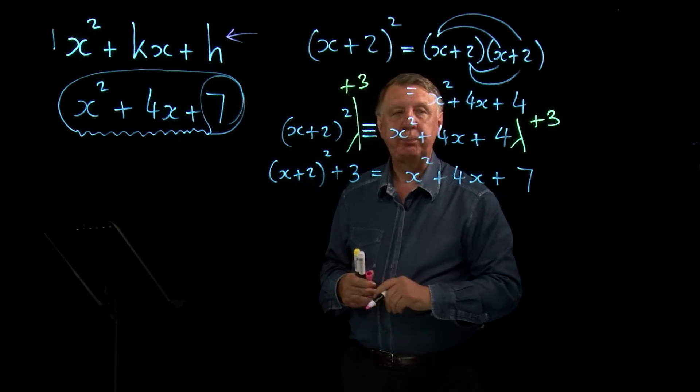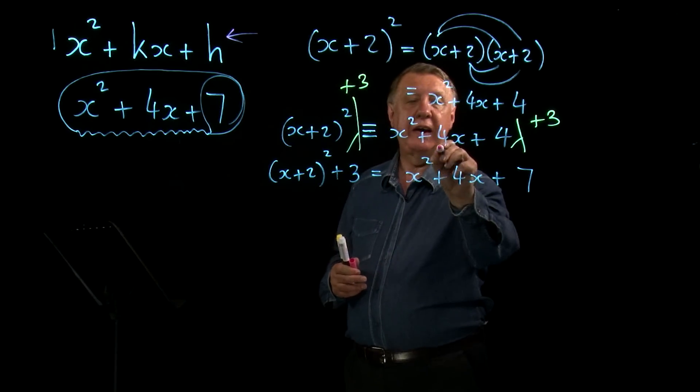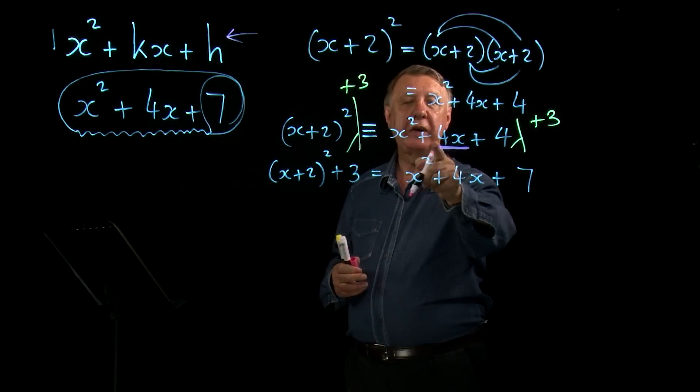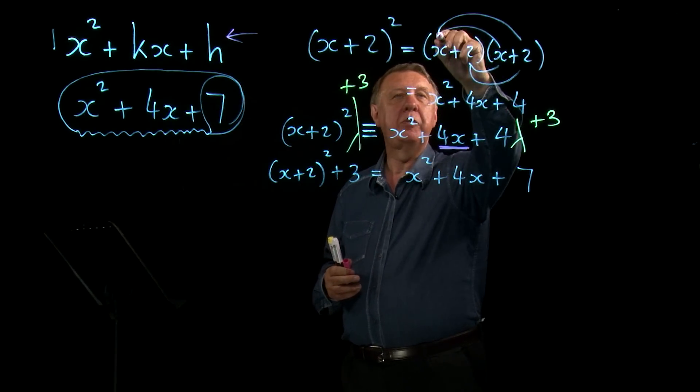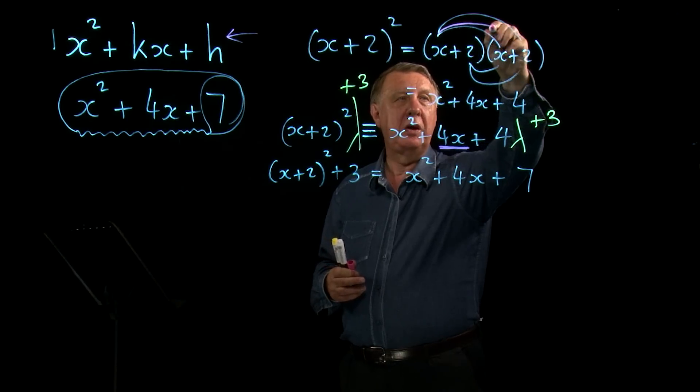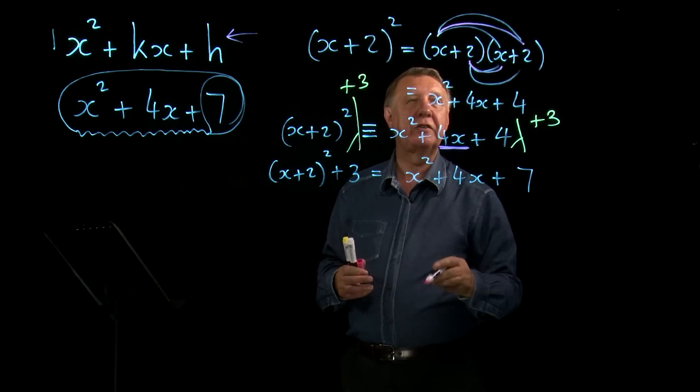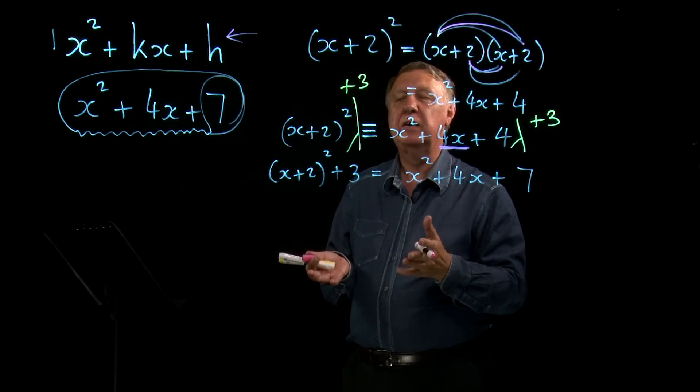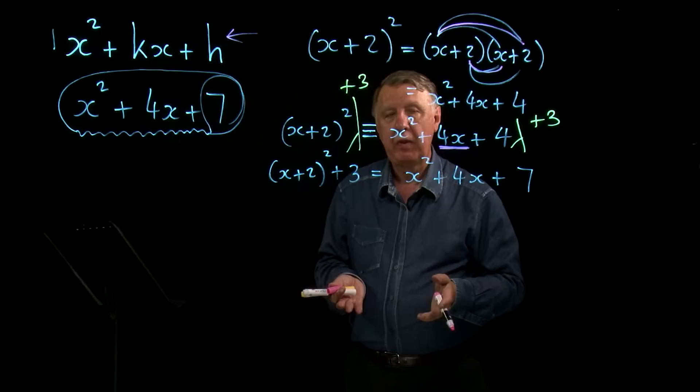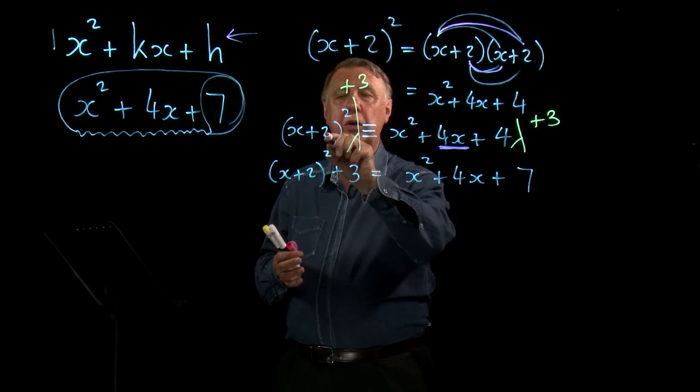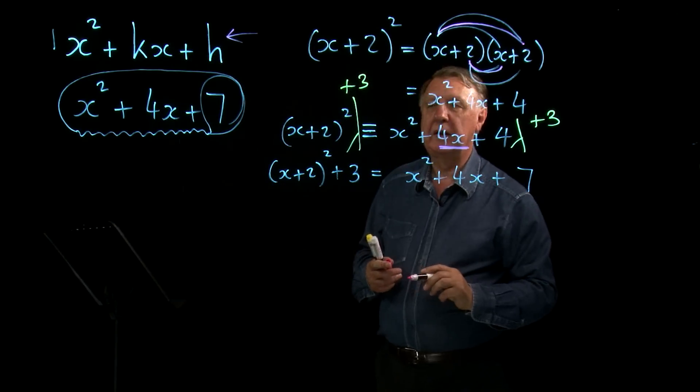Why did I choose 2? Well, I need to get 4x. And of course, the only way I get the x is when I'm doing this multiplied by that 2 and this multiplied by that 2. In other words, I do the same thing twice. So, to get 4x, I halve the 4, which is why I've written 2 there.